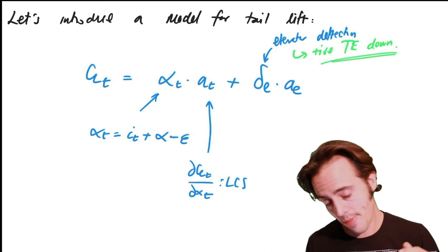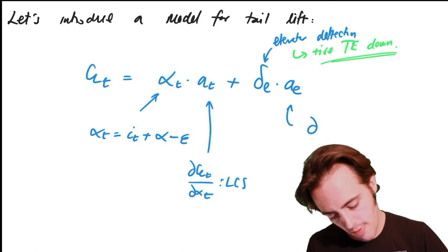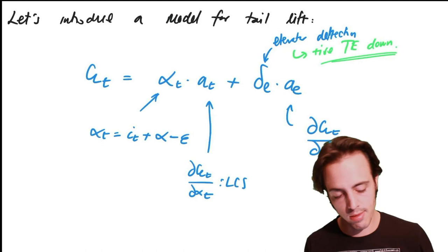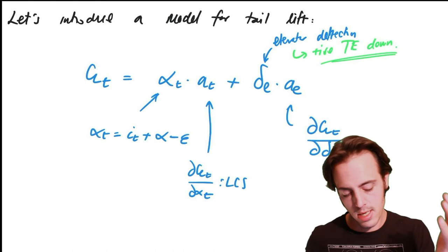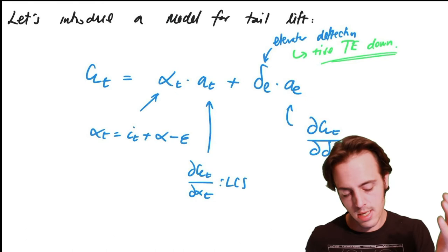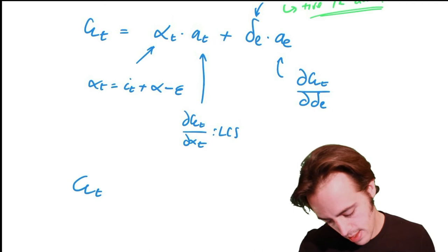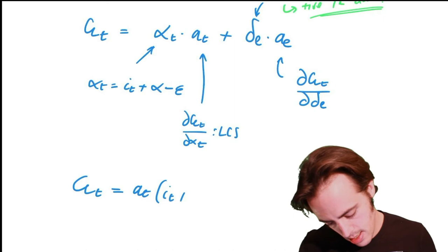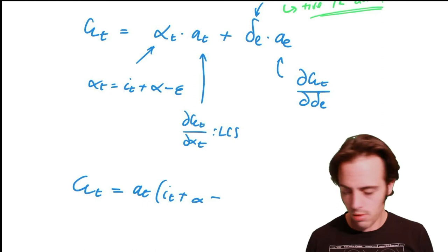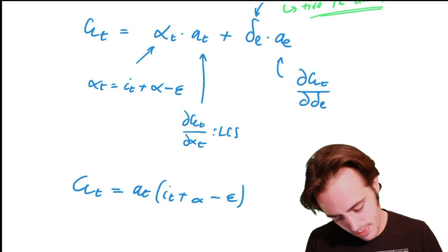The rate of change of tail lift with elevator deflection — as the elevator gets more deflected down, we get an increase in lift. According to this sign convention (positive trailing edge down), this would be a positive number. If the convention was trailing edge up as positive, we'd expect a negative number. Substituting alpha_T into the expression: C_L_T equals A_T times (I_T plus alpha minus epsilon) plus A_E times delta_E.